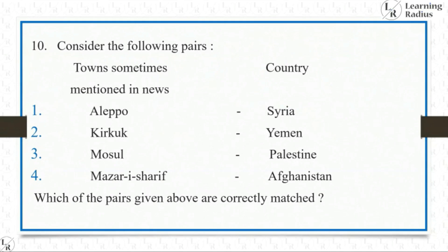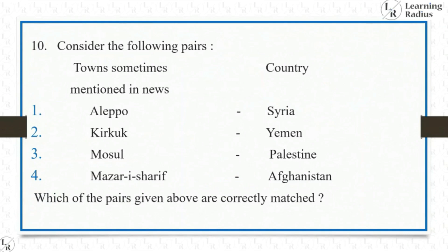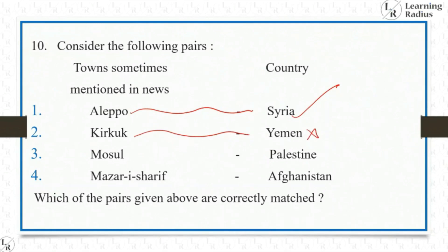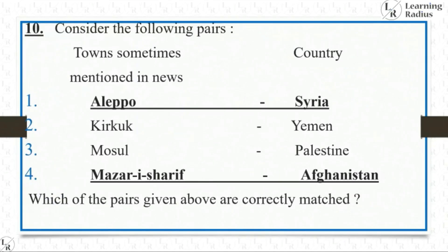Consider the following pairs of towns sometimes mentioned in news and their countries: Aleppo–Syria, Kirkuk–Yemen, Mosul–Palestine, Mazar-i-Sharif–Afghanistan. Which pairs are correctly matched? Aleppo is in Syria — correct. Kirkuk is not in Yemen; it is in Iraq — wrong. Mosul is not in Palestine; Mosul is in Iraq — wrong. Mazar-i-Sharif is in Afghanistan — correct. So pairs 1 and 4 are correctly matched. The answer is 1 and 4.